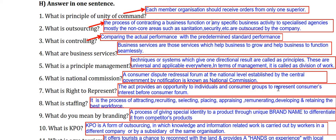What is controlling? Controlling is comparing the actual performance with the predetermined standard performance. This is a short and sweet definition chosen from the textbook. You can start your one-liner with: 'Controlling means...'